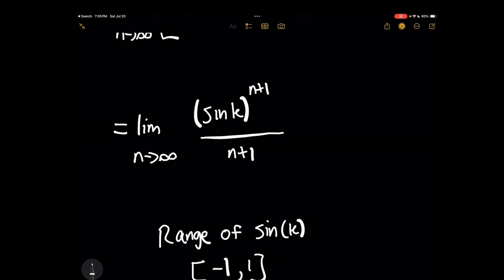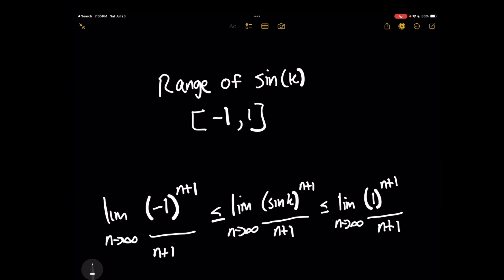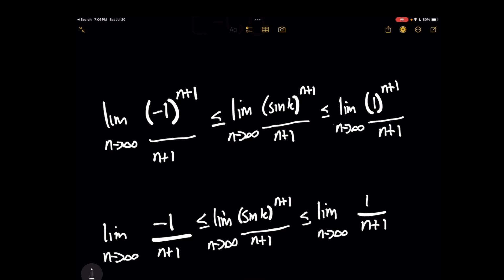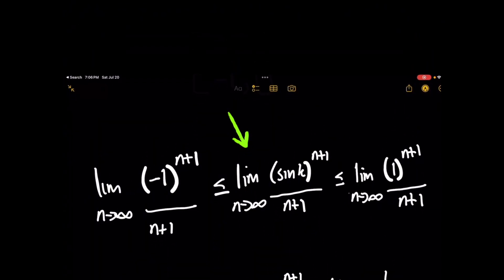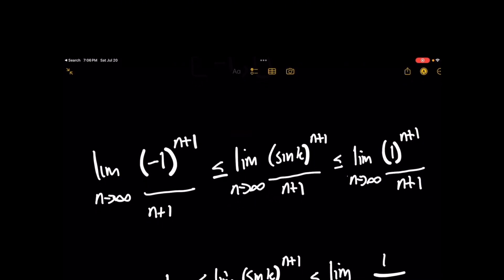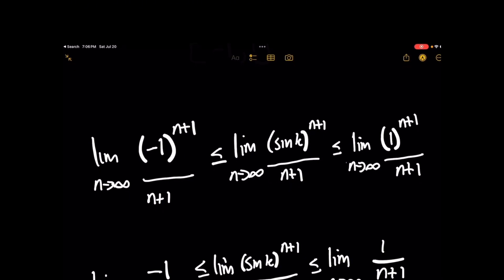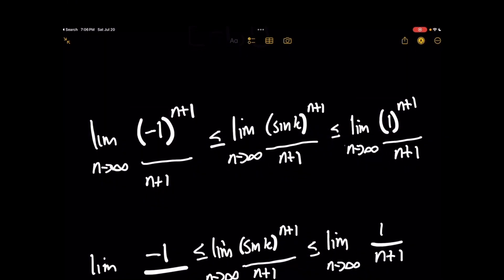If the smaller and greater parts have a convergent value, we might be able to show the limit does exist. For the inner part of the inequality, I'll use the original expression. In the numerator we have sine of k raised to the n plus 1, and for the lower and upper bounds, because the range of sine of k goes from negative 1 to 1, I simply plug those values in and keep the denominators the same.